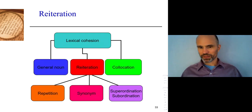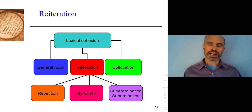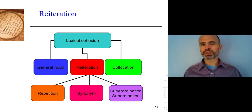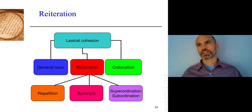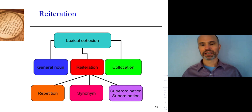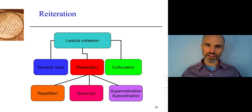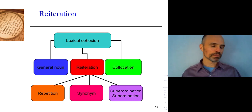What I was talking about for the last several slides was reiteration — saying the same thing again, but differences between types of reiteration. Repetition: use the exact same word. Synonym: different word, same meaning. Superordinate and subordinate: somewhere on the hierarchy, the two words are related because one is a type of the other.